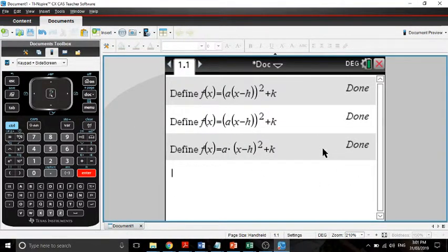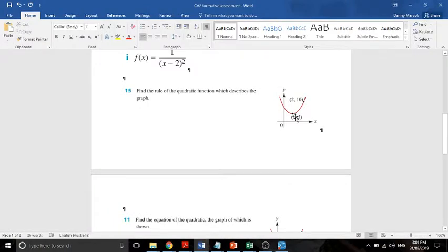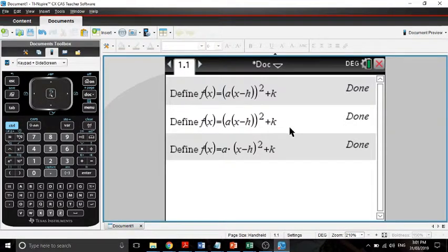Okay. So then from there, what we're going to do is we're going to say that, so we take our turning point, which is 1 and 5. So we're going to say, I don't know if we need to do that. So we've got 1 because it's positive 1 and 5. So that's what we've got for our equation.